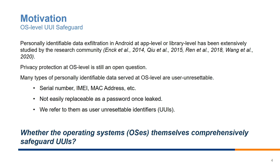Moving to the research perspective, during the past decades we have witnessed personally identifiable data exfiltration in Android at app level and even library level, extensively studied by the research community. However, privacy protection at OS level remains an open question. We also learned that many types of personally identifiable data served at OS level are actually user-unresetable — not easily replaceable like a password once leaked. We refer to those data as user-unresetable identifiers, or UUI. This makes us curious about whether operating systems themselves comprehensively safeguard UUIs.